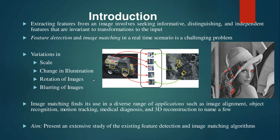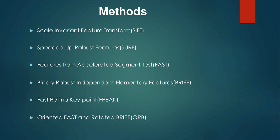Image matching is used in a diverse range of applications such as image alignment, object recognition, motion tracking, medical diagnosis, and 3D reconstruction. The aim of this project is to summarize the performance of nine robust feature detection and image matching algorithms.